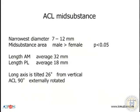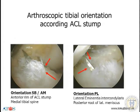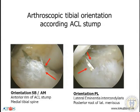The mid-substance area is also significantly bigger in males. The length of the AM bundle is about 3 centimeters, and the length of the PL bundle is about 2 centimeters — 1 centimeter less. We have an axis of 26 degrees from the vertical alignment of the ACL, and we know that the ACL is twisted around 90 degrees, which we use in patellar tendon reconstruction. For arthroscopic tibial orientation, I think it's very good to orientate according to the ACL stump. If the stump is there, that's the easiest and best way — I try to place a single bundle in the anterior part of the insertion site.